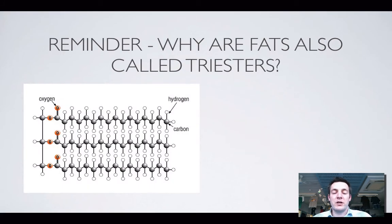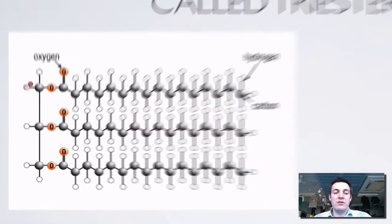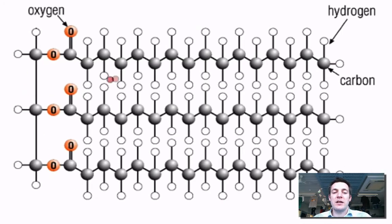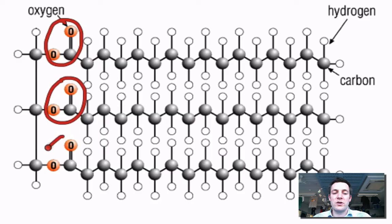Let's start by looking at a fat and considering why it can be called an ester — in fact, why it can be called a triester. Here is a fat molecule; they tend to be quite large molecules with very long carbon chains attached via ester groups. Here are three ester groups, hence they're triesters, and they're attached by these ester groups to a carbon backbone.